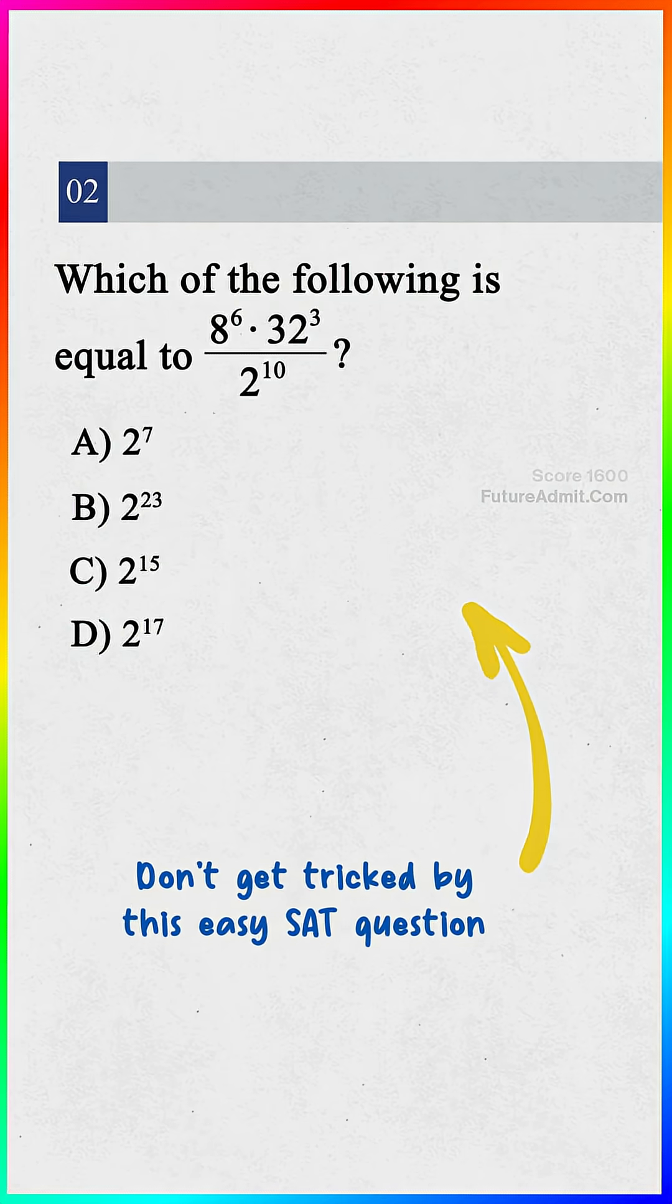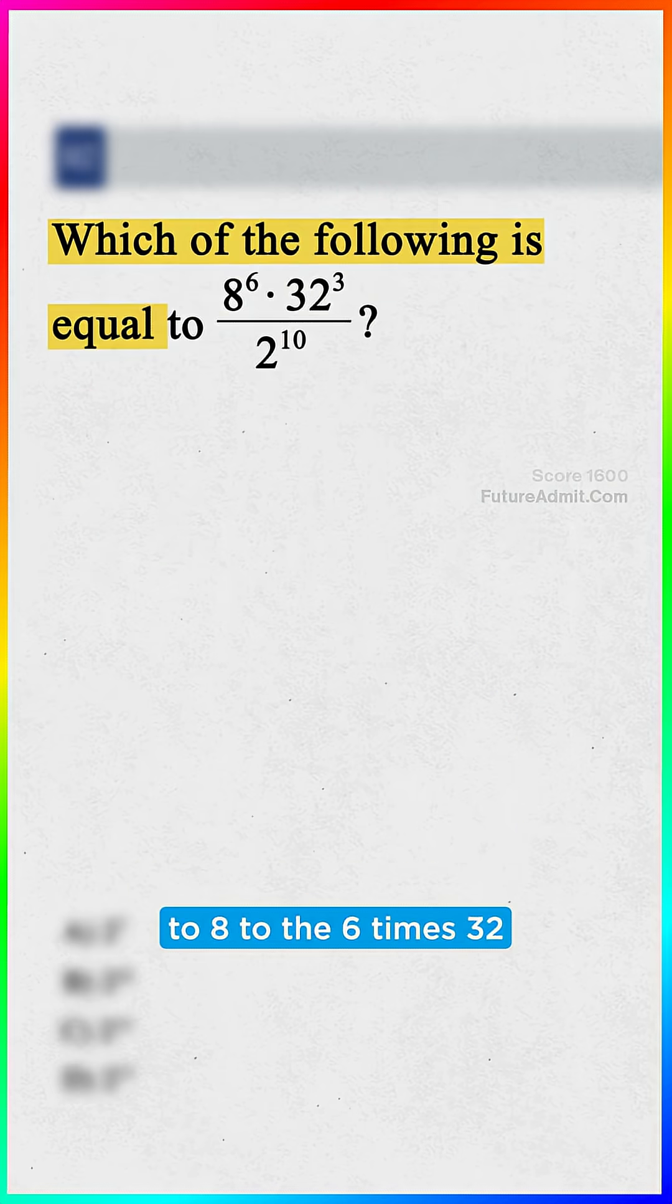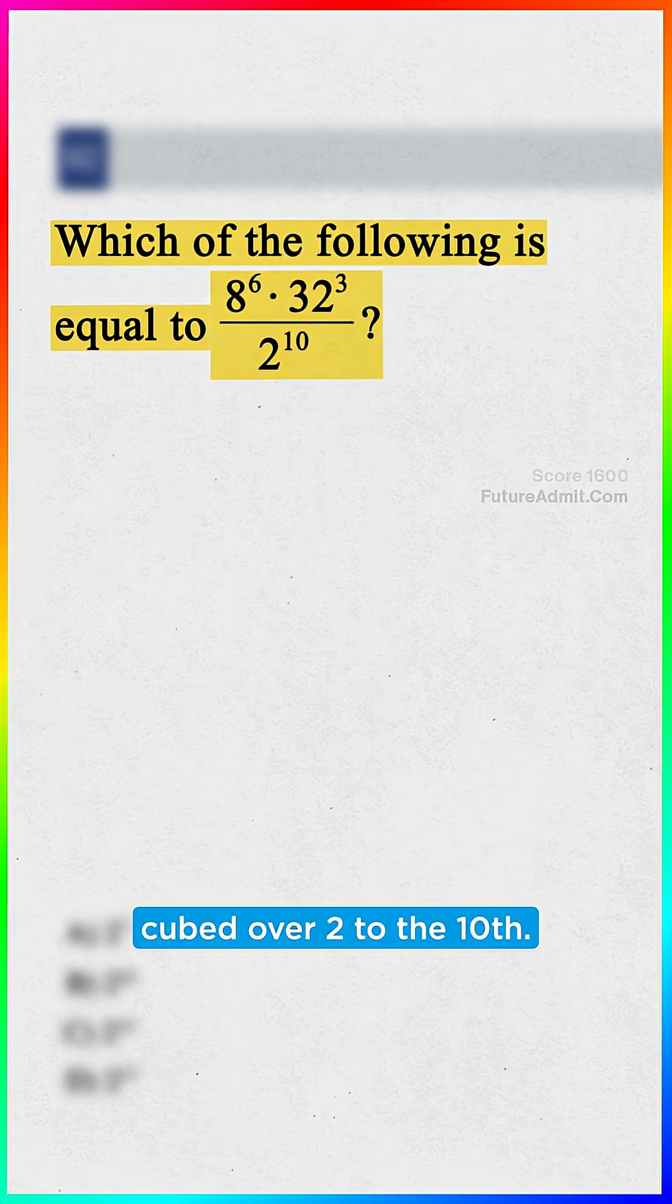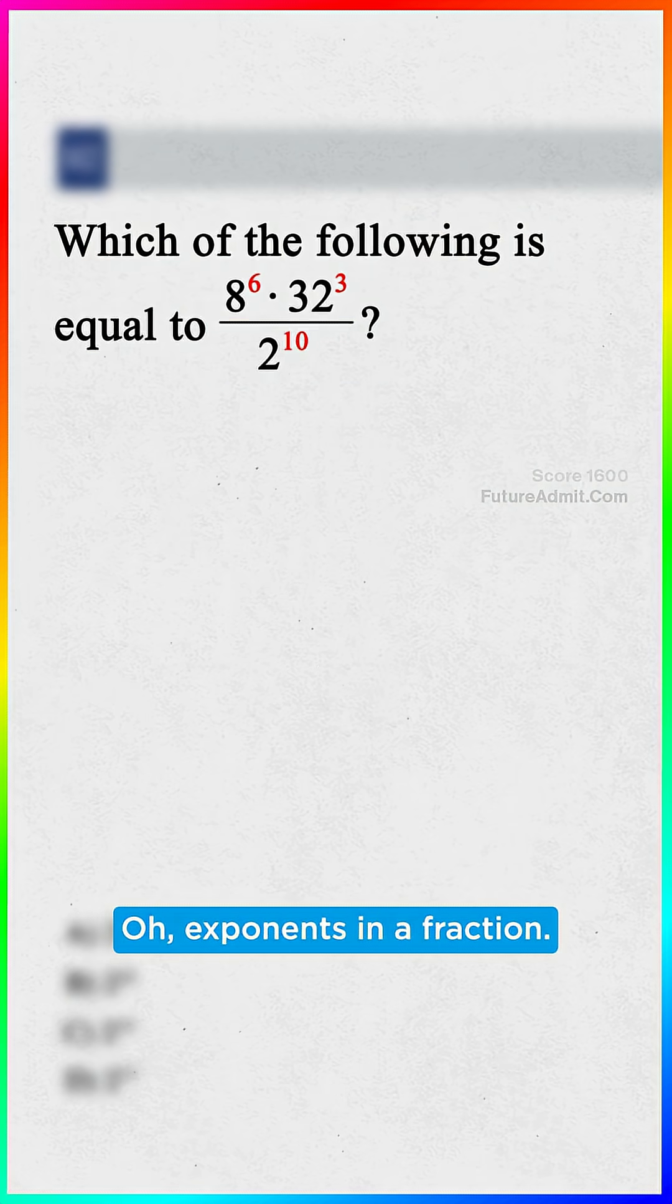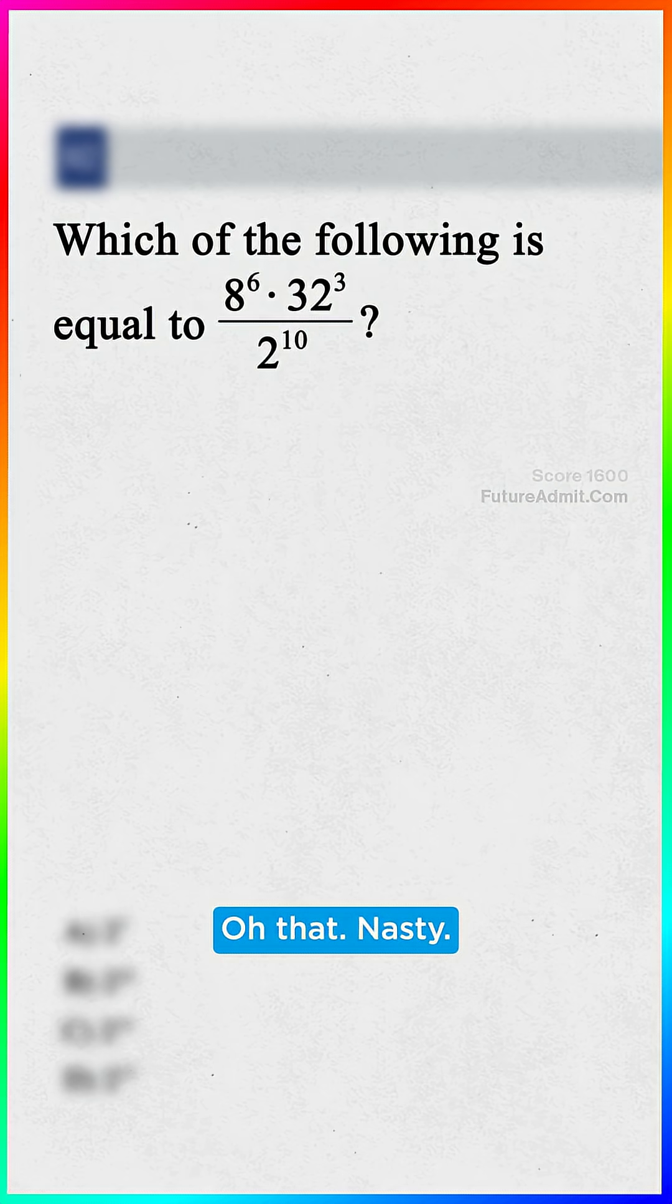Don't get tricked by this easy SAT question, which is equal to 8 to the 6 times 32 cubed over 2 to the 10th. Whew! Exponents in a fraction? Oh, that's nasty!